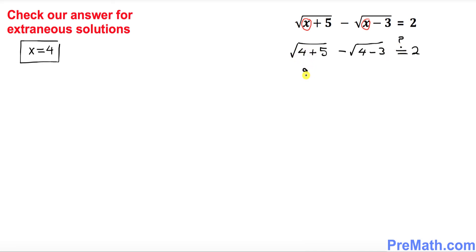So 4 plus 5 is 9 square root minus square root of 1 on the left hand side that's going to give you 3 minus square root of 1 is 1 question mark. Is it equal to 2? 3 minus 1 is 2. My question is 2 equals to 2. That is yes. That means this statement is true. Thus x equal to 4 is our solution.